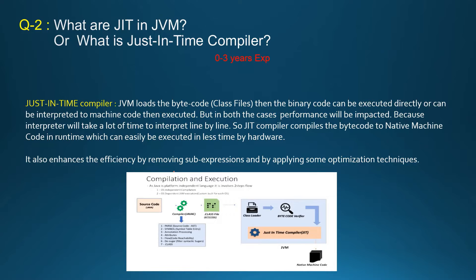As we saw in this picture, JVM loads the bytecode after the .java file is compiled to a .class file. JVM utilizes a class loader and loads the class. The binary bytecode can then be executed directly or interpreted to machine code. If you are utilizing an interpreter, the performance will be slower because the interpreter interprets line by line — it goes to the first line, then the next line, then the next line. To avoid this, the Just-In-Time compiler compiles the bytecode to native machine code, which executes faster by the hardware.